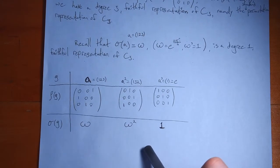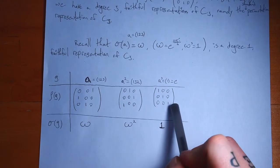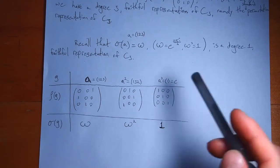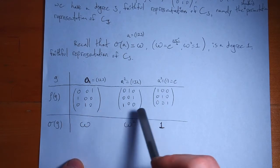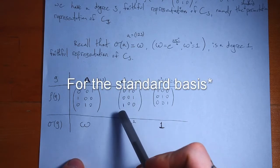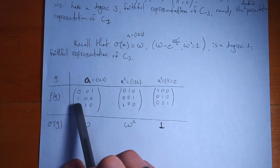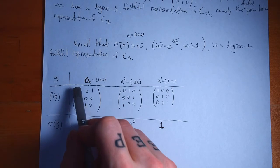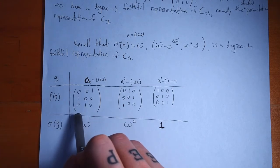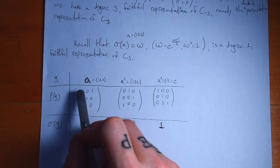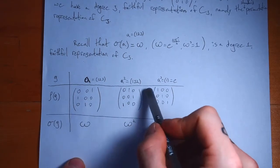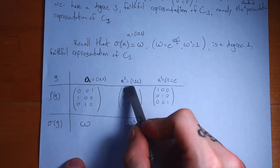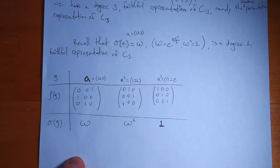A permutation matrix always looks like this: the columns always have all zeros except for one entry that's a 1. This tells you where each basis vector gets mapped. For (1,2,3): 1 goes to 2, 2 goes to 3, 3 goes to 1. For (1,2,3)²: 1 goes to 3, 2 goes to 1, 3 goes to 2. That's what's going on with permutation matrices.